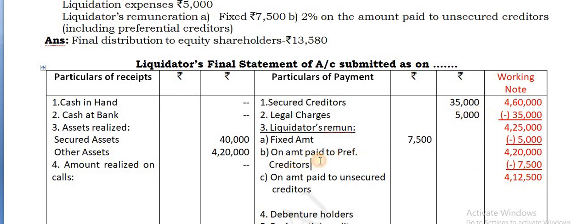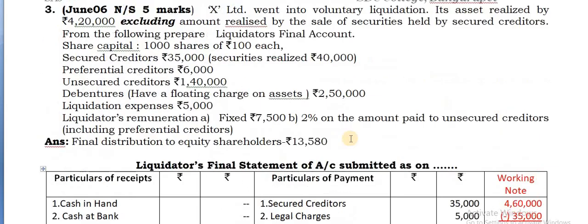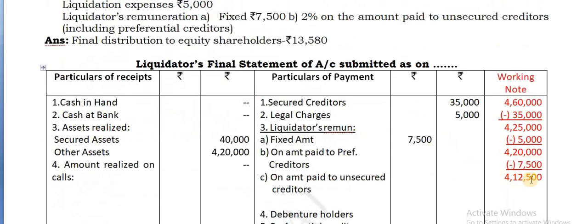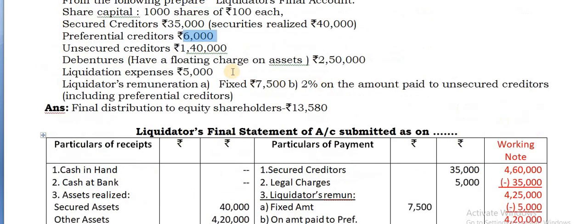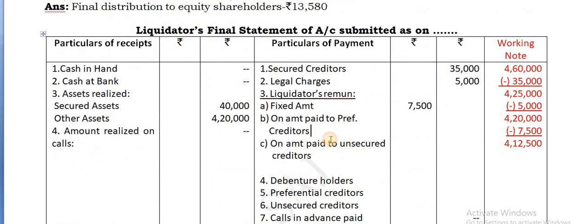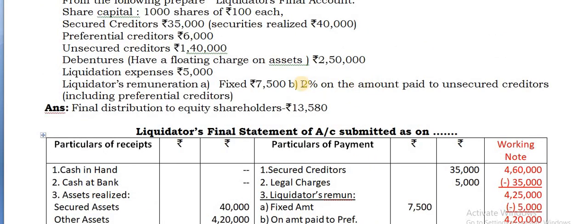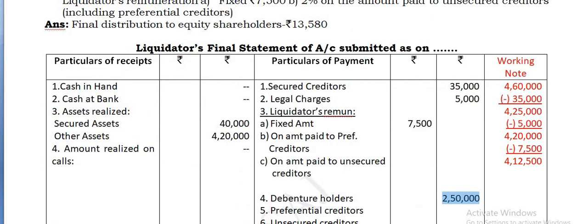An amount paid to preferential creditors - see how much is the amount payable? 6,000. But what is the cash available? 4 lakhs plus change in it. So 6,000 can be easily paid, full amount can be paid. Therefore, calculate on 6,000 into 2% directly.